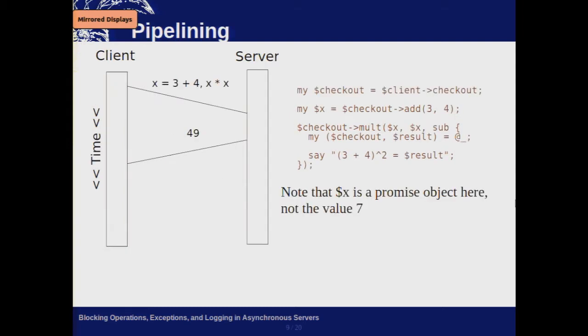Another feature supported in the RPC pipeline branch of AnyEvent::Task — I haven't pushed it out quite yet, I need to write a few more tests — is pipelining. It's called promise pipelining, also used in the E language. The promises module on CPAN talks about promise pipelining, but it's a different kind; this is as implemented in the E language.